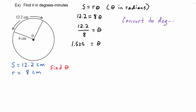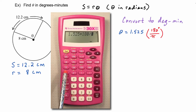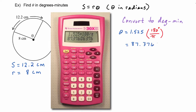The first step is to get it into degrees. We take theta equals 1.525 radians and multiply by the conversion factor of 180 degrees over pi. On the calculator, we take 1.525 multiplied by 180 then divided by pi, and we get 87.376 degrees.